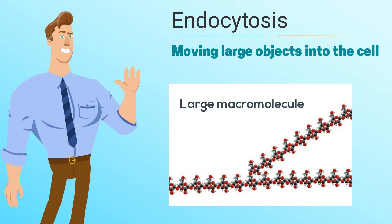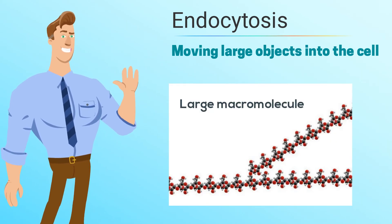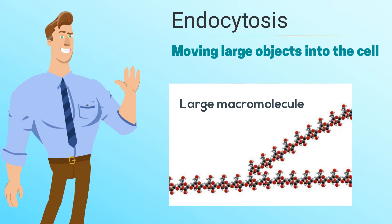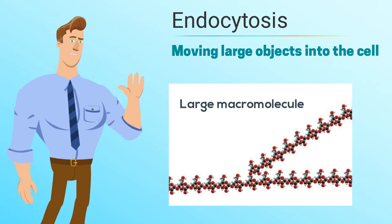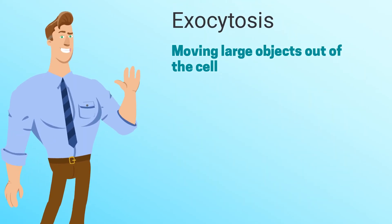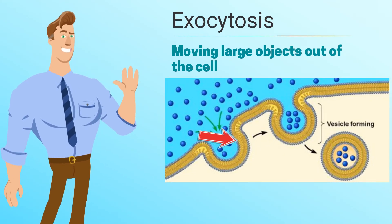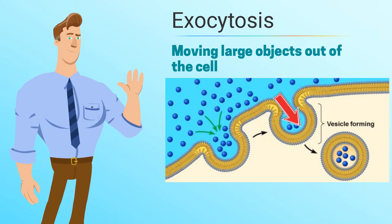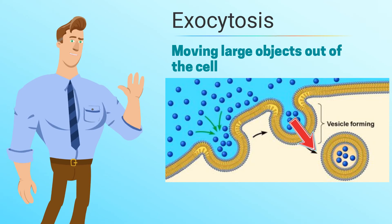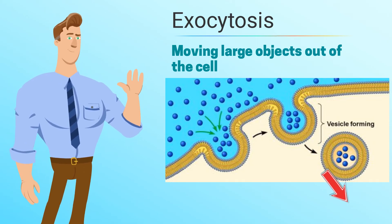A large molecule like a polysaccharide can use endocytosis to be brought into the cell. Exocytosis is the opposite, in which the cell moves objects out of the cell by pinching off a vesicle and releasing the object outside the cell.